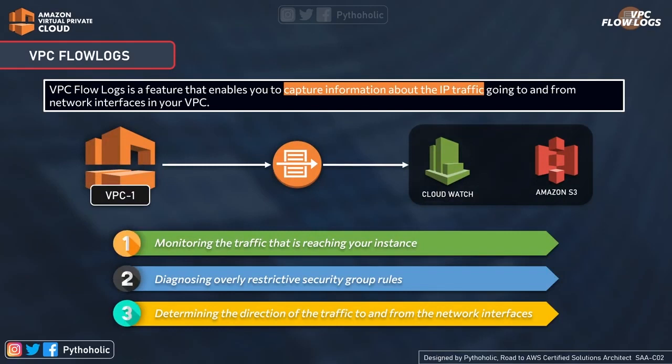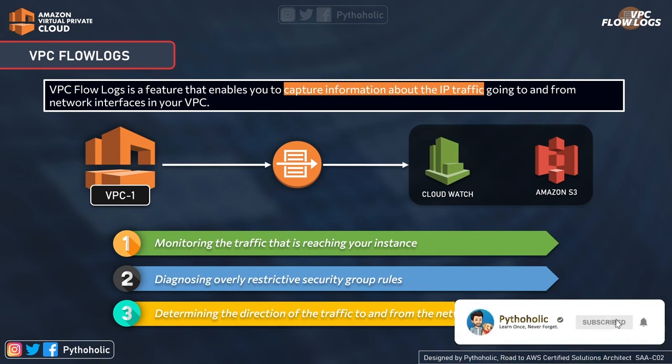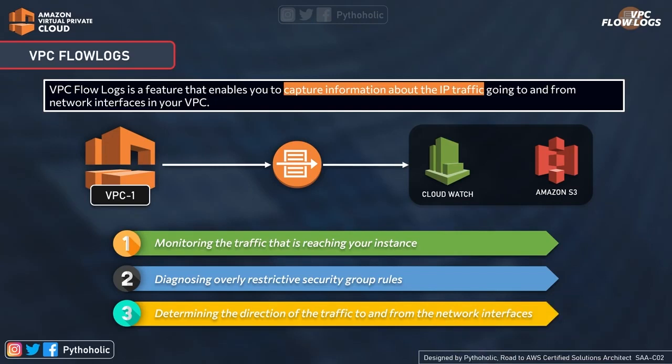VPC flow logs is a feature that enables you to capture information about the IP traffic going to and from the network interfaces in your VPC. When you read 'being a feature,' imagine having an option to switch it on or off for a service you are currently using. That's why it's mentioned that VPC flow logs is a feature that enables you to capture information in the form of logs. You can publish the flow log data to Amazon CloudWatch Logs or Amazon S3.